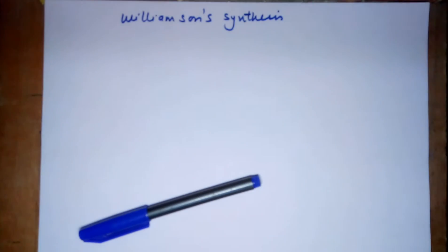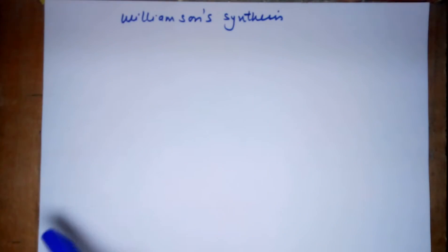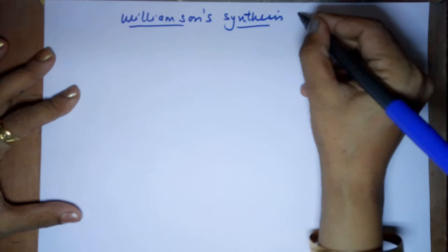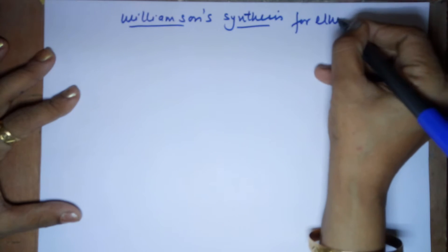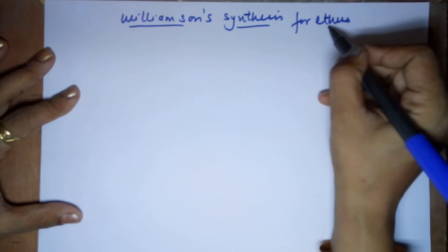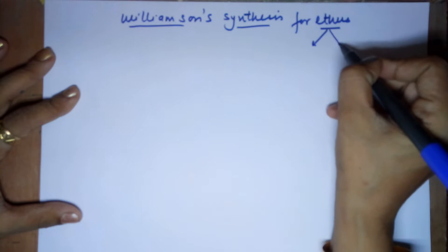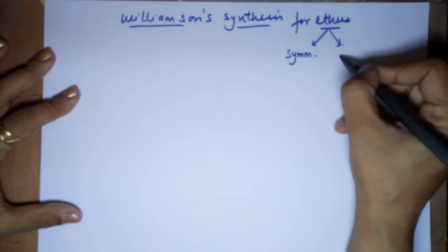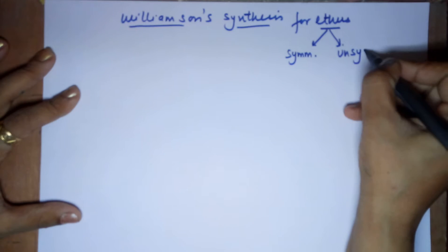Good evening kids. Today's topic is Williamson's Synthesis. This method is used for ethers. Now which type of ethers? Ethers are of two types: symmetrical and unsymmetrical.